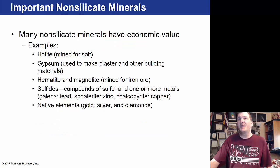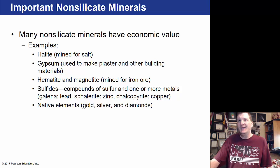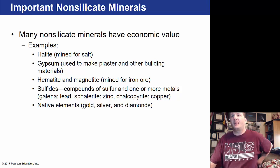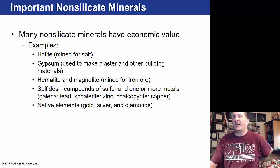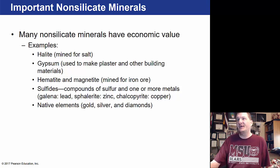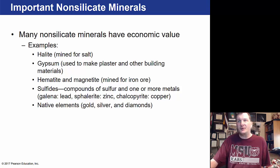Some non-silicate minerals have great economic value: halite is mined for salt, gypsum is used to make plaster and building materials, hematite and magnetite are mined for iron ore. Sulfides are compounds of sulfur and lead, zinc, or copper. Native elements include gold, silver, and diamonds.